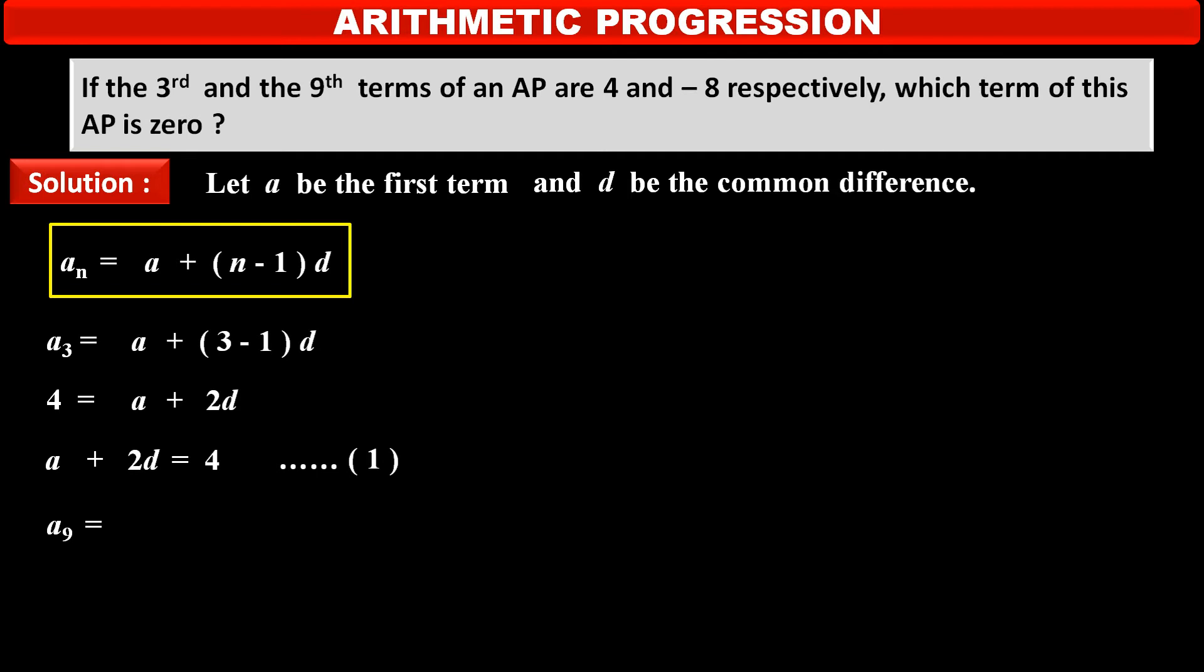Now, ninth term of an AP that is A₉ is equal to A plus in bracket 9 minus 1 into D. Ninth term is given minus 8. So, minus 8 is equal to A plus 9 minus 1 that is 8D.